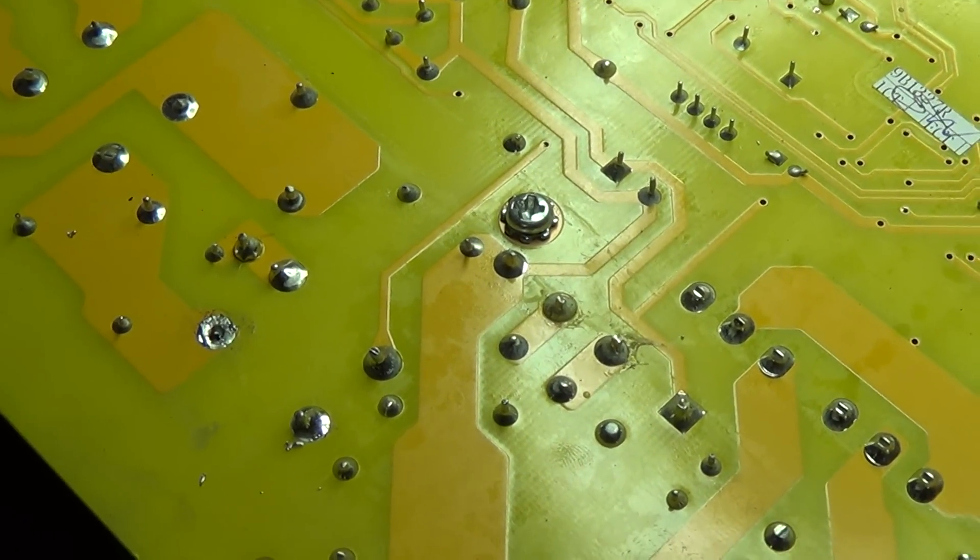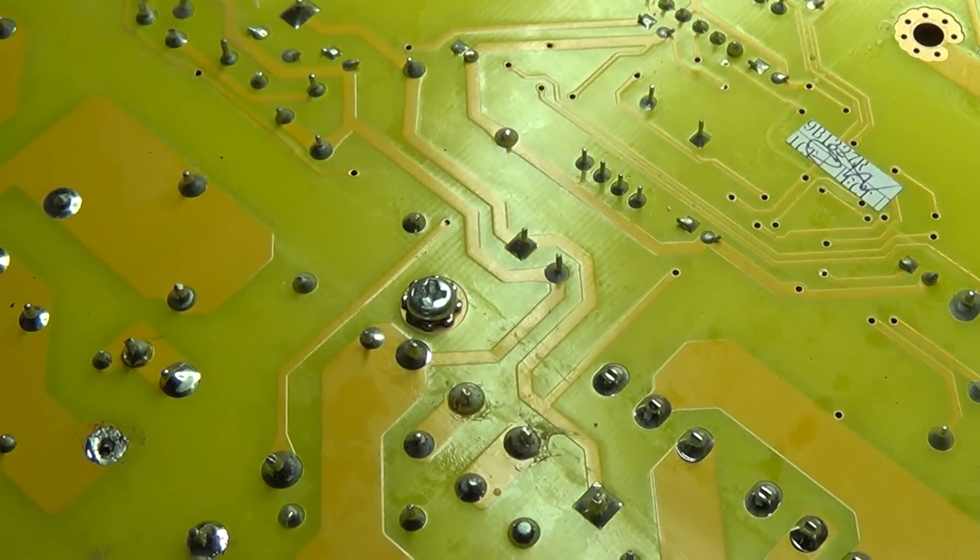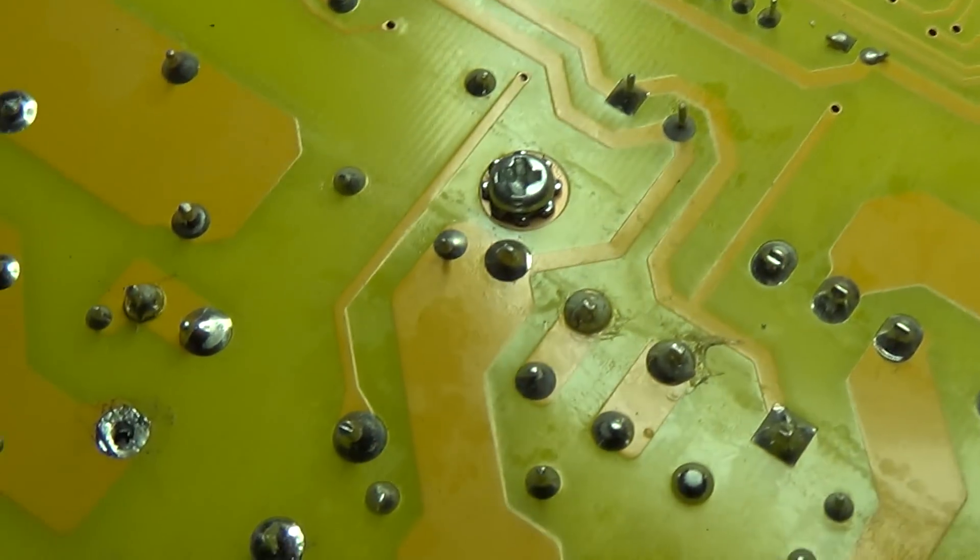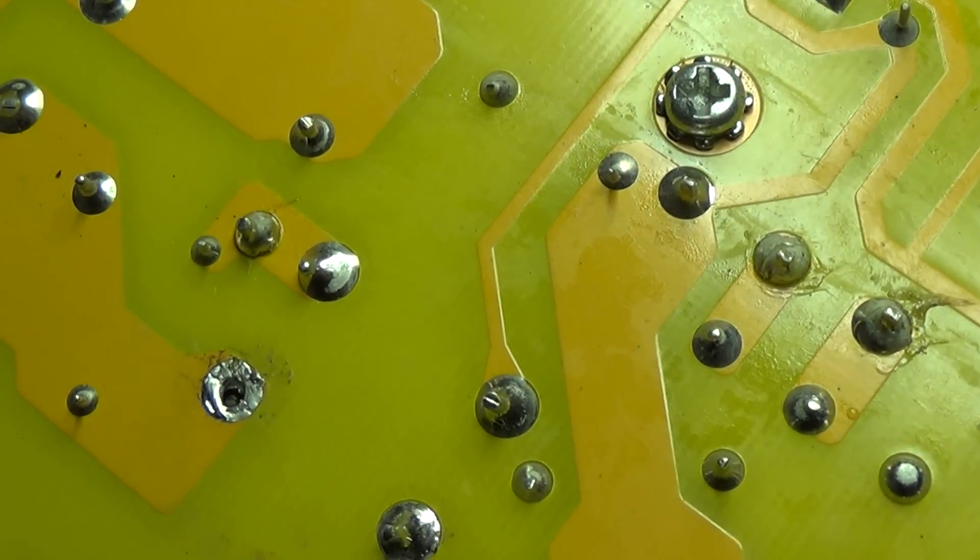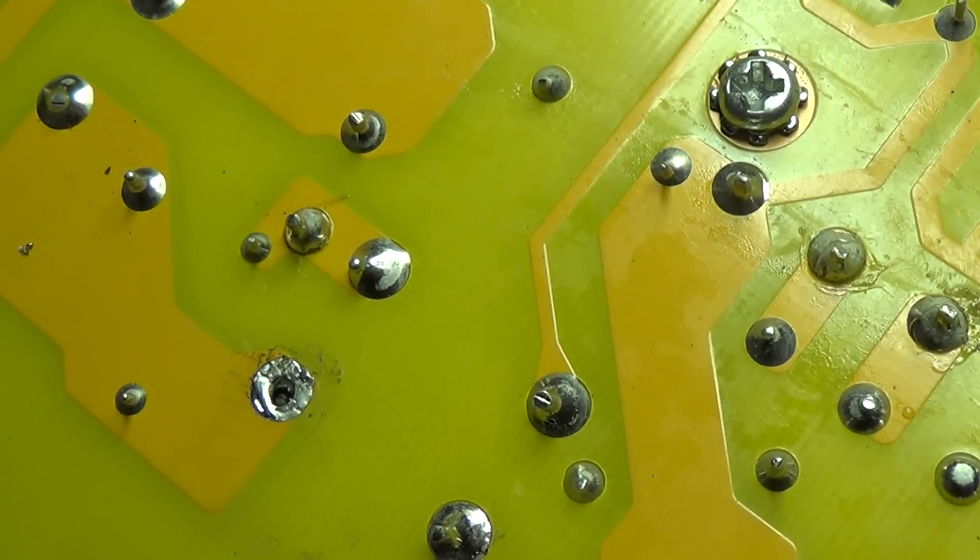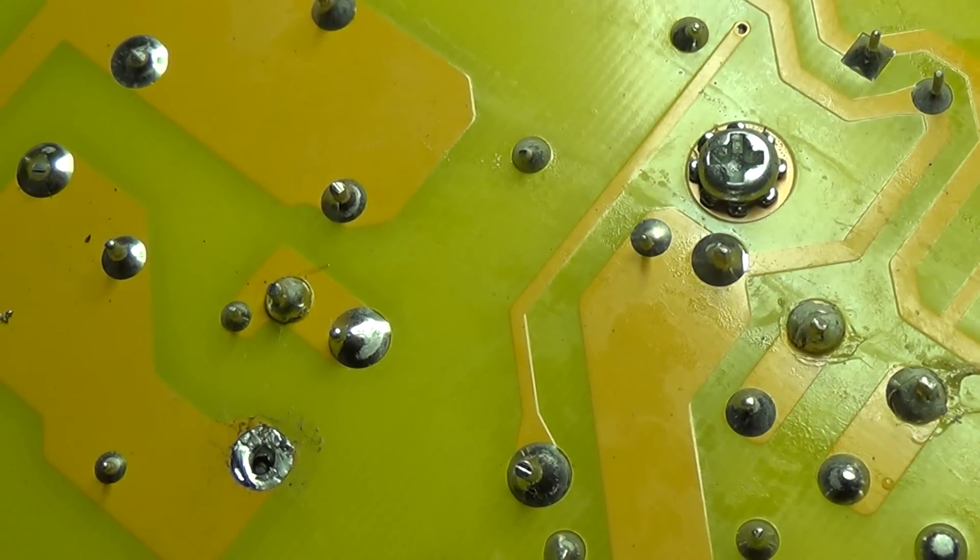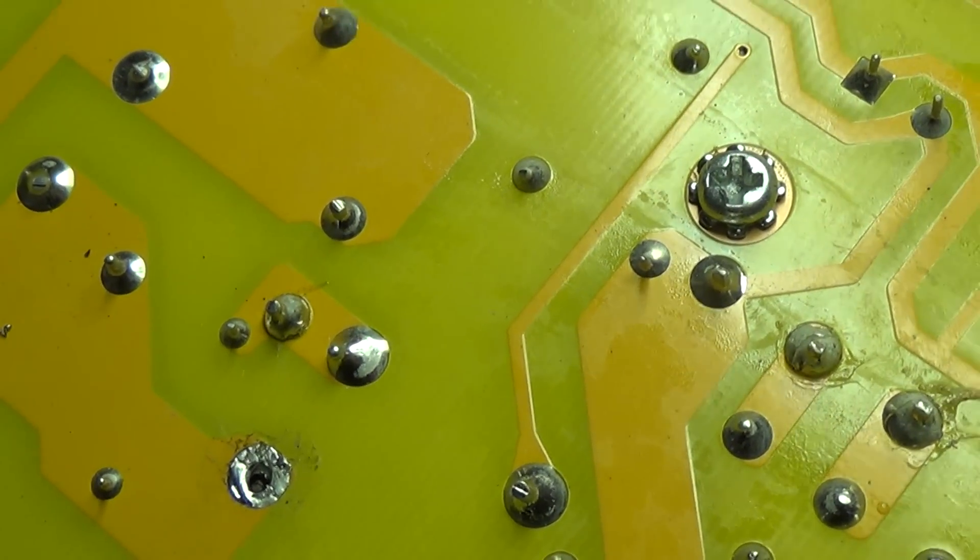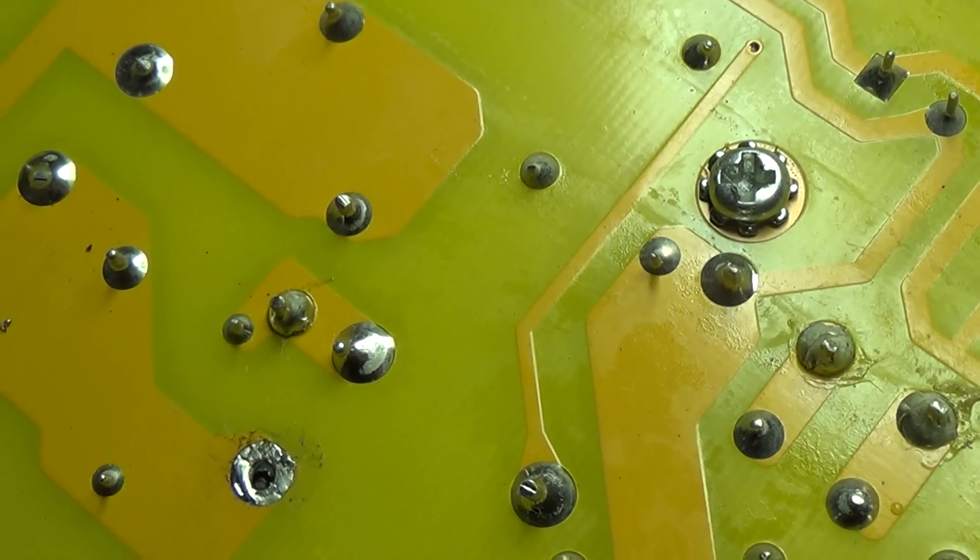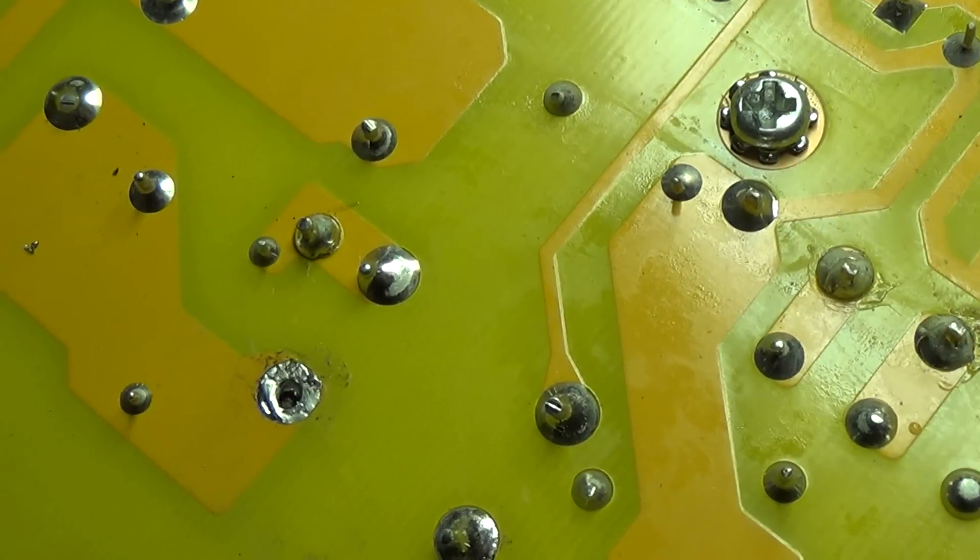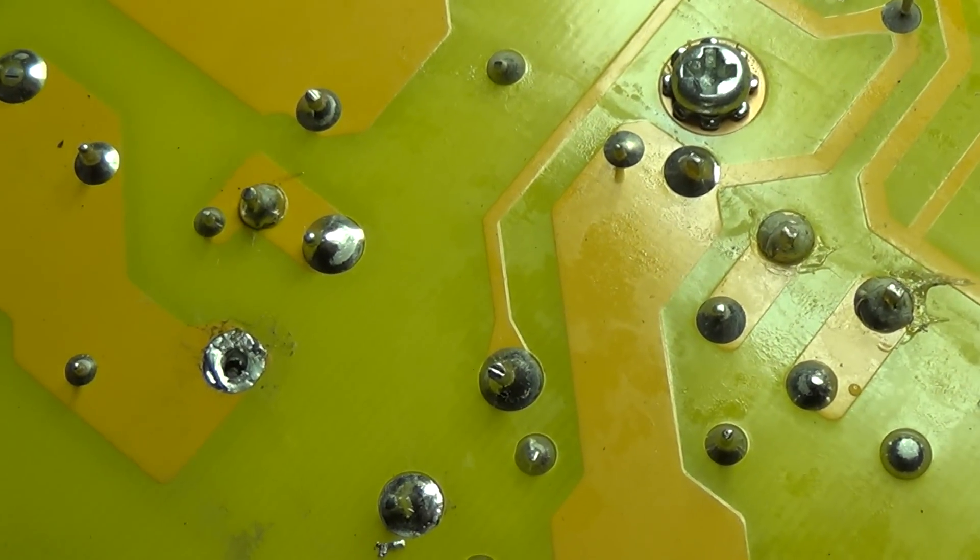Now I've gotten the solder off the joint there. If you look, you can see that the lead does not protrude through the hole. It was just barely touching on the top. I'm going to clean it up both sides, put the lead back through, solder it well, and we'll go from there.